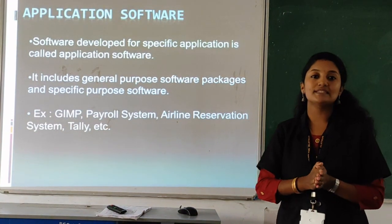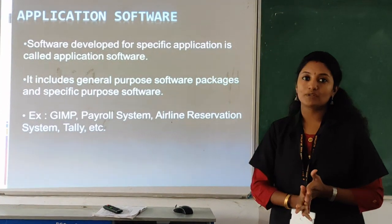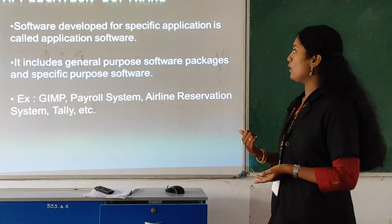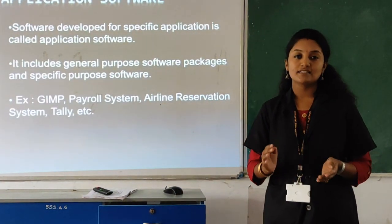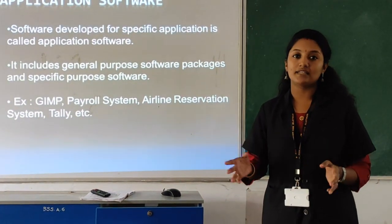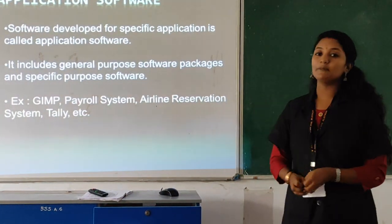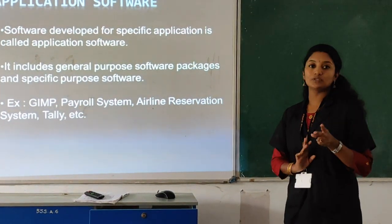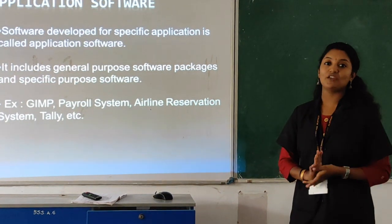So far we have discussed system software and its types: utility software, language processors, and operating system. Now next is application software. Application software are the software which performs a particular task in a particular application area. Application software are developed for specific applications and include two types: general purpose software and specific purpose software.